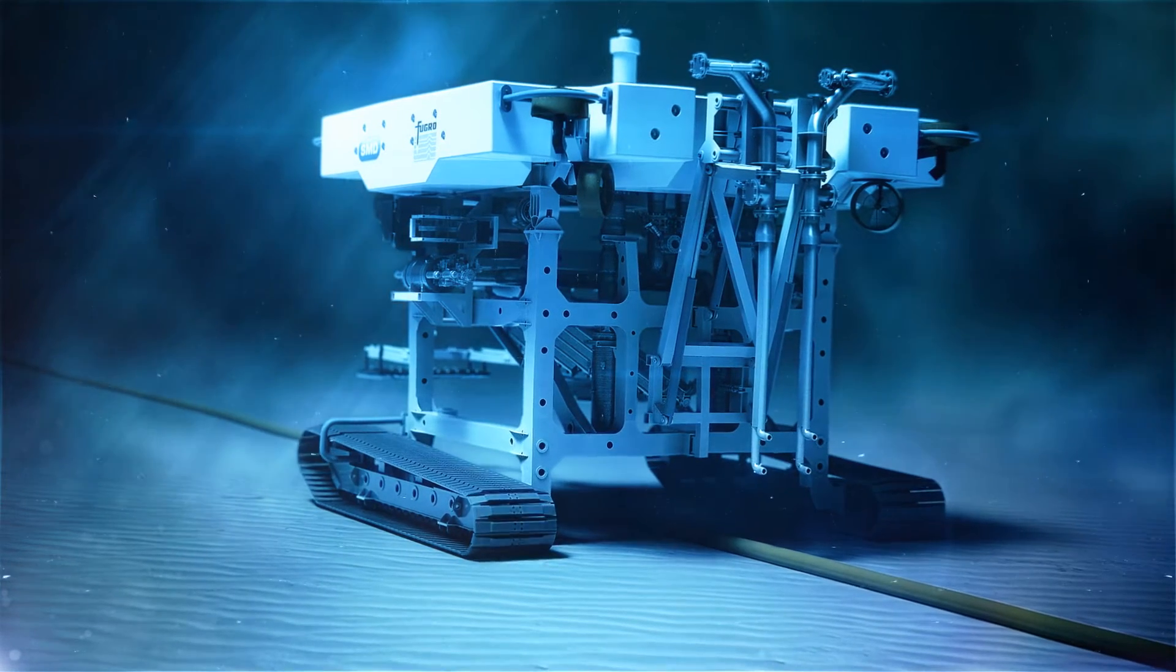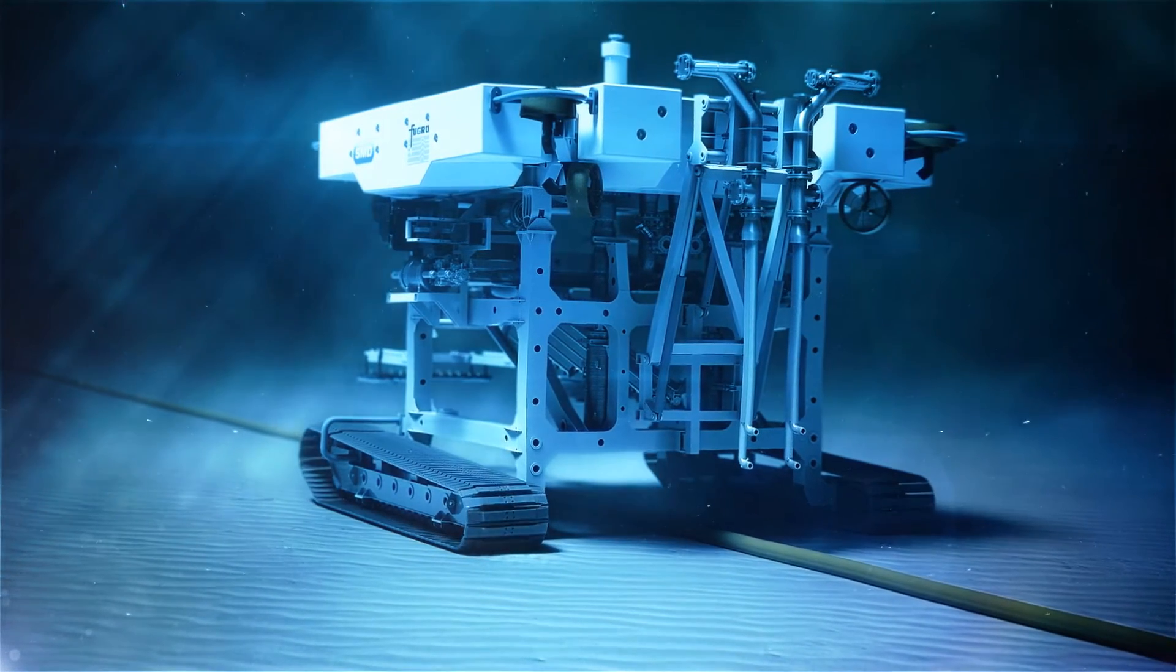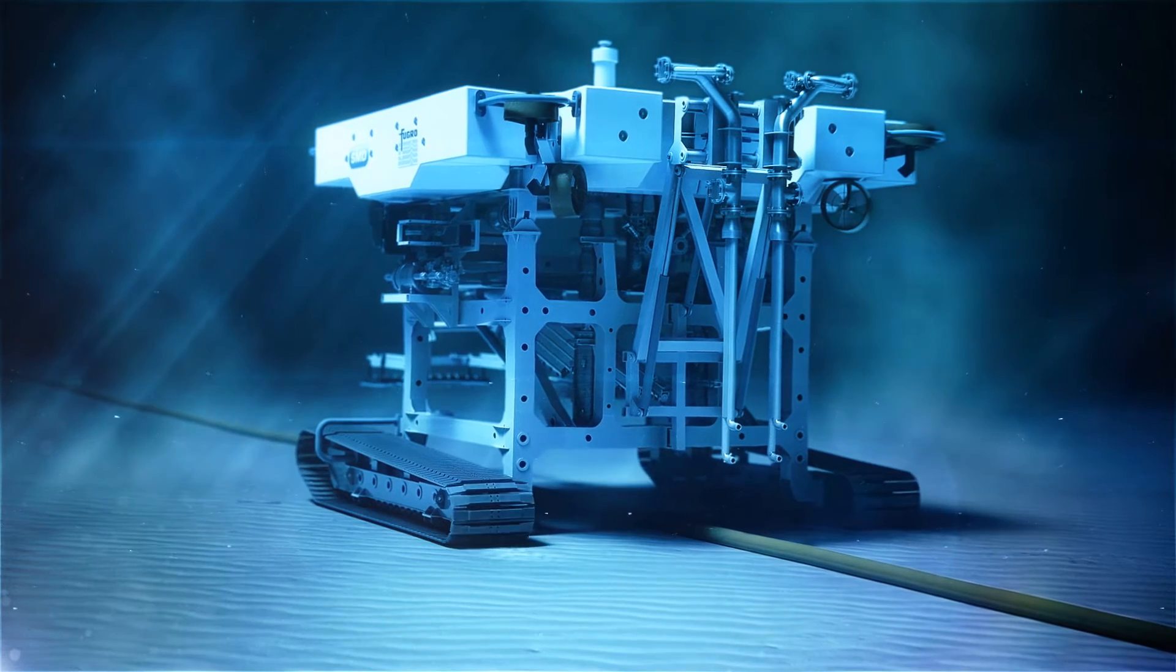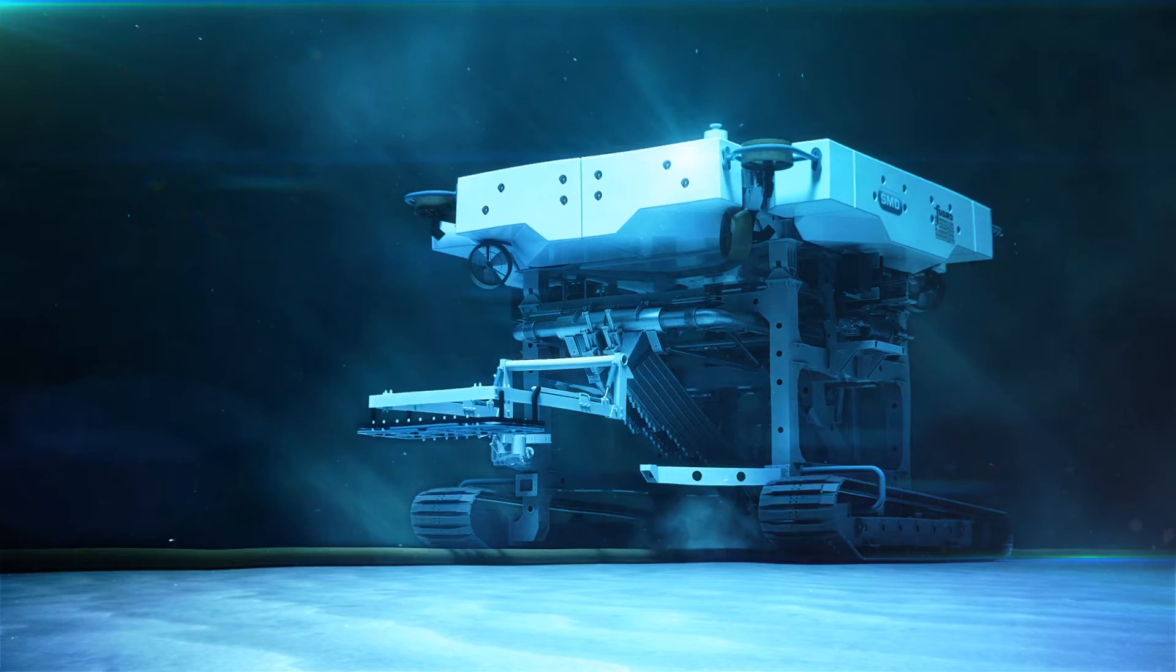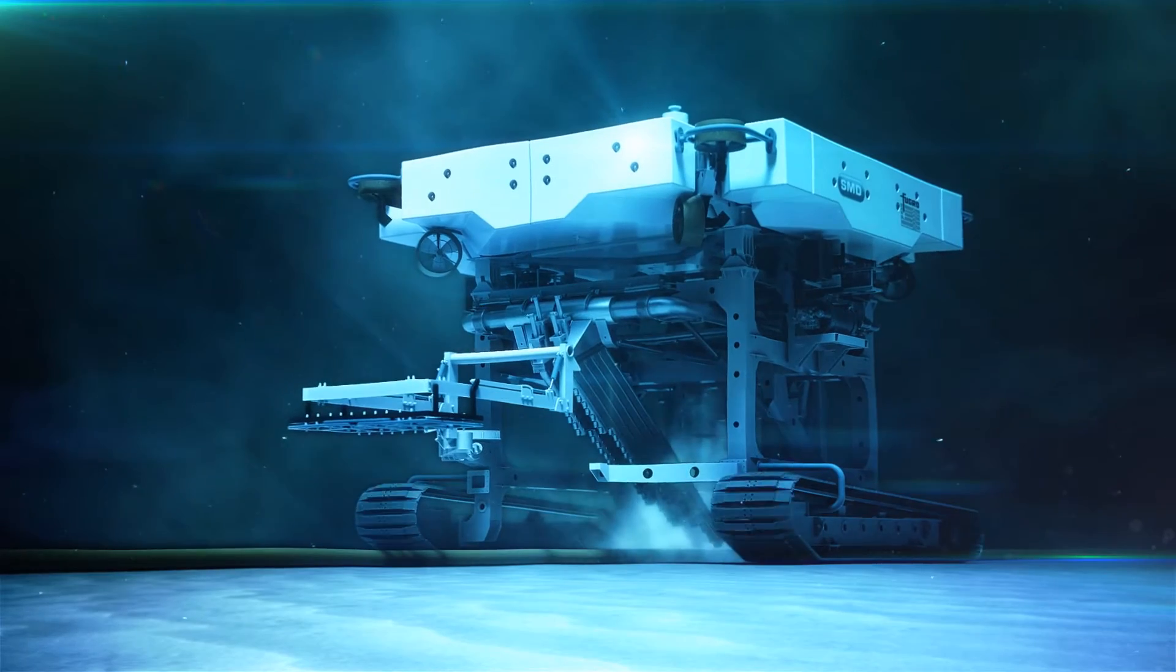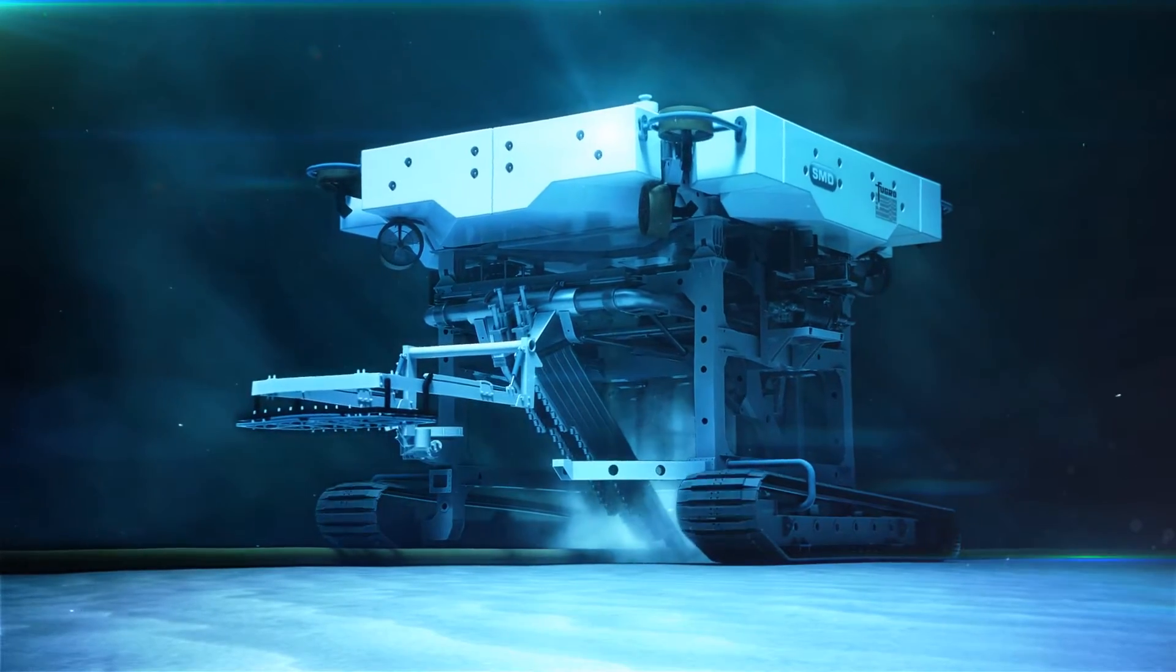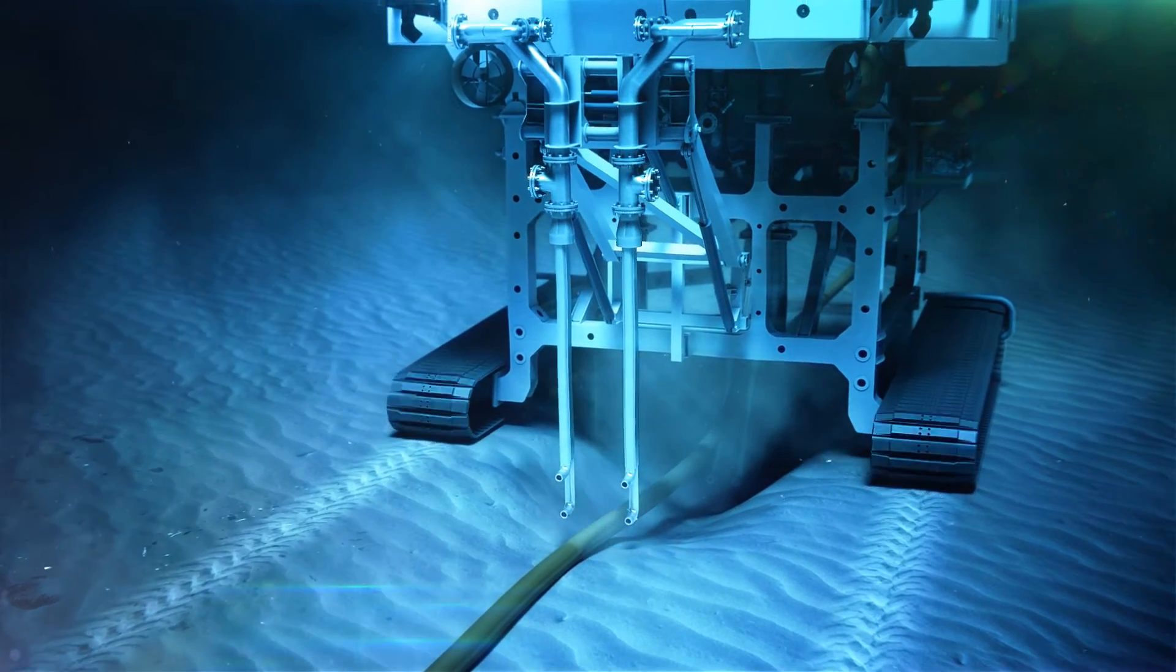The rear backflush tool directs high volume dredge pump flow and low-pressure water jets back into the trench, maintaining non-cohesive soils in suspension. Maintaining an open trench allows stiffer or lighter products time to fall before the trench backfills.